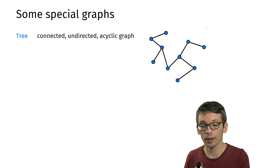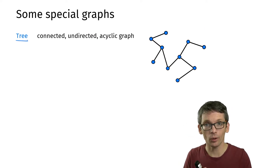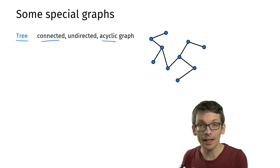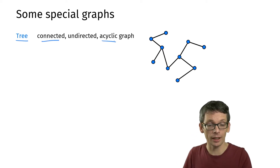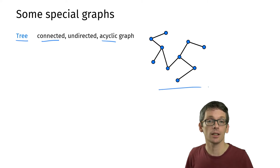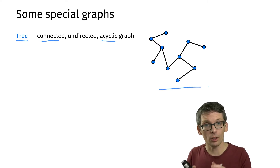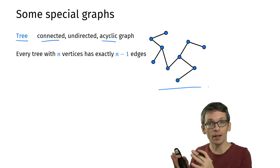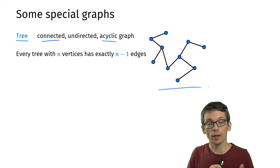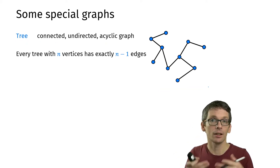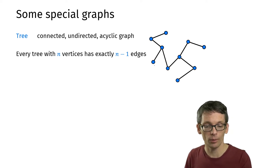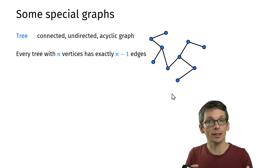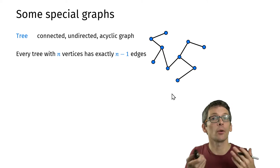A special type of graph is a tree. A tree is an undirected graph that is connected and acyclic — it has no cycle. One property of trees is that if we have n vertices, we will have exactly n minus 1 edges. This example has 10 vertices and 9 edges. With fewer edges it wouldn't be connected; with more edges we would have a cycle.